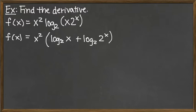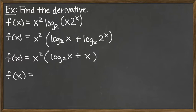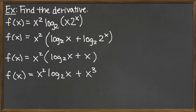Continuing to use algebra rules to clean up: we still hold x squared out front with parentheses. Log base 2 of x can't be further simplified. But log base 2 of 2 to the x — since the log base 2 and the exponential base 2 undo each other — that just leaves us with x. We can also distribute x squared across, giving us x squared times log base 2 of x plus x cubed. At this point, we haven't taken any derivative yet — we've just prepared the function.